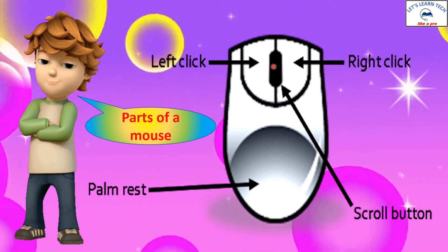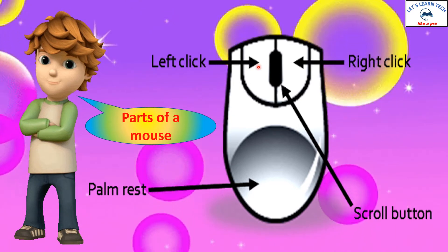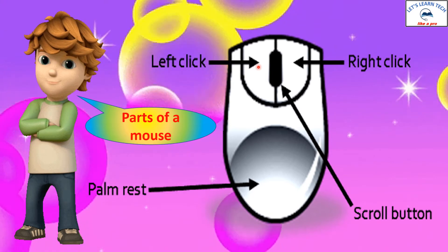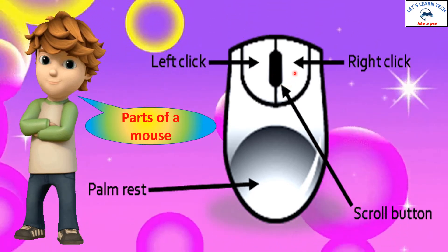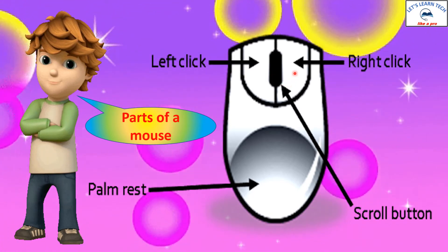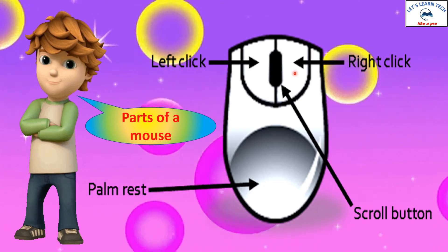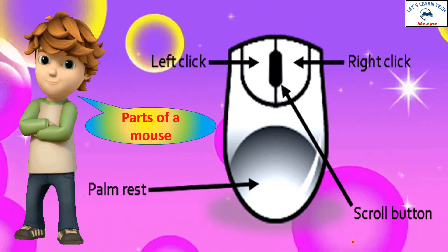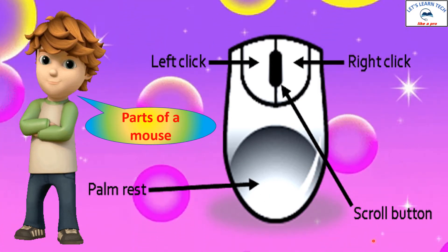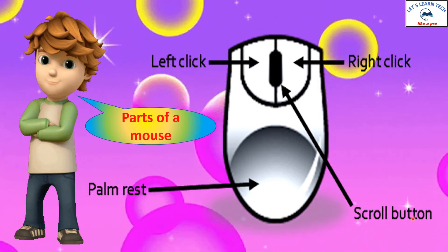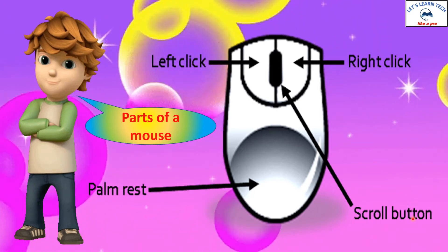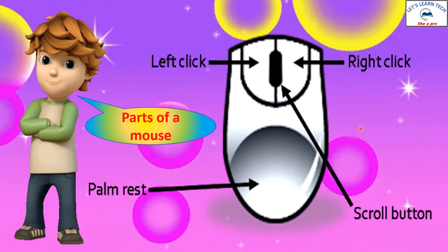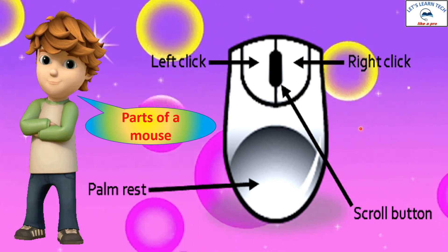To choose an object on the screen, you left-click or double-click the left button. If you want to choose an option from a drop-down menu, you right-click. This is the palm rest area where you can rest your palm, and with the help of the scroll button, you can scroll the screen up and down on the monitor. These are all the different parts of a mouse.